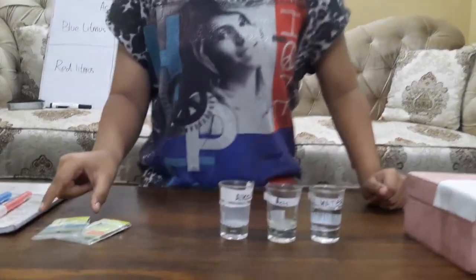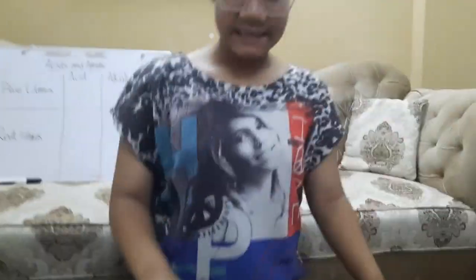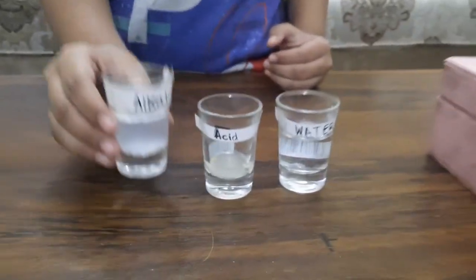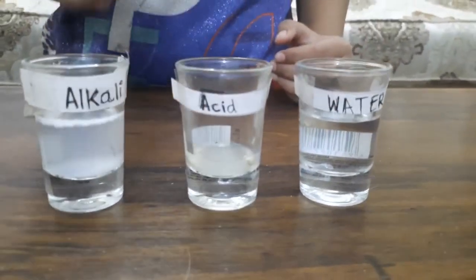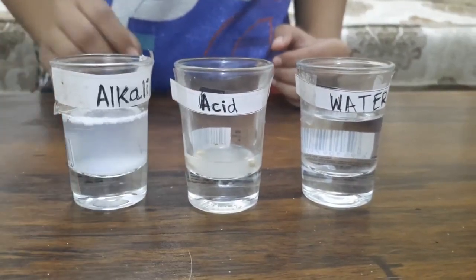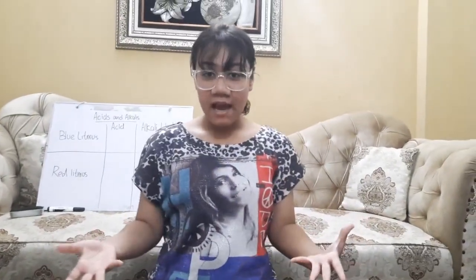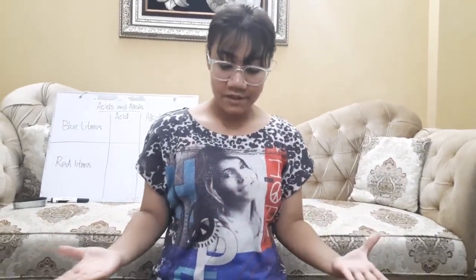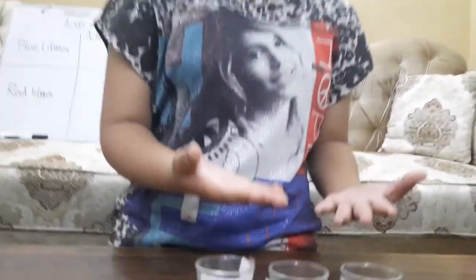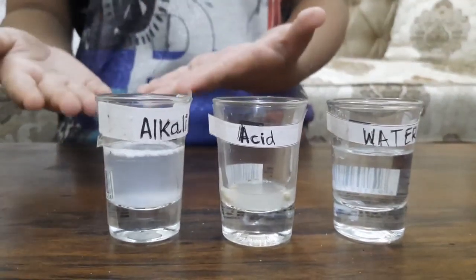Here I'm going to show you — we have litmus paper blue and red. The reason I'm keeping this in a Ziploc bag is that if we keep it outside for the experiment, it won't work. I have Alkali, Acid, and Water in three different beakers, as you can see here. As I mentioned, Acids and Alkalies are in our usual home supplies. So, as Acid I used Lemon, and as Alkali I used Detergent — or in simple language, soap water. And water, we can actually drink it.